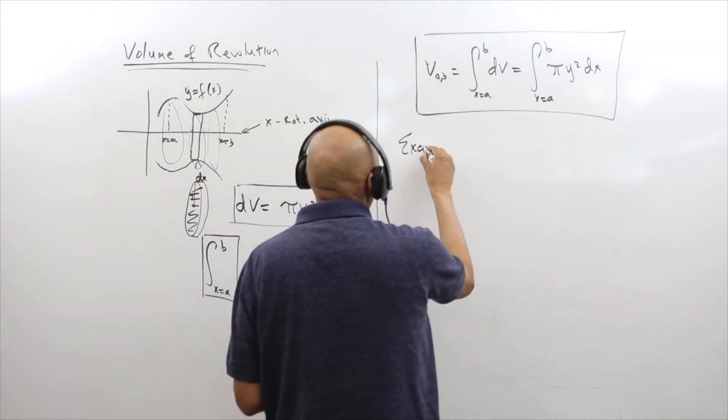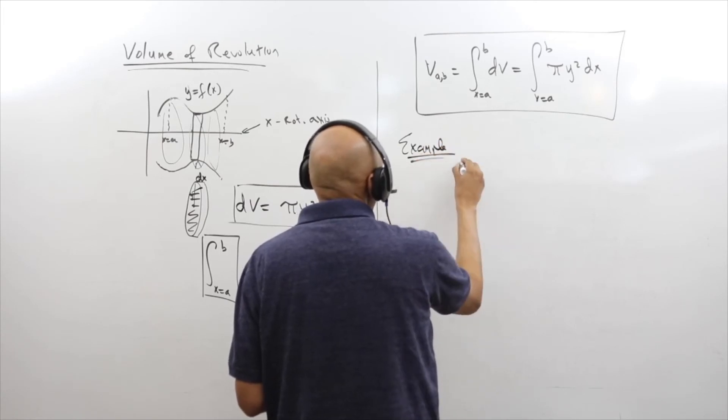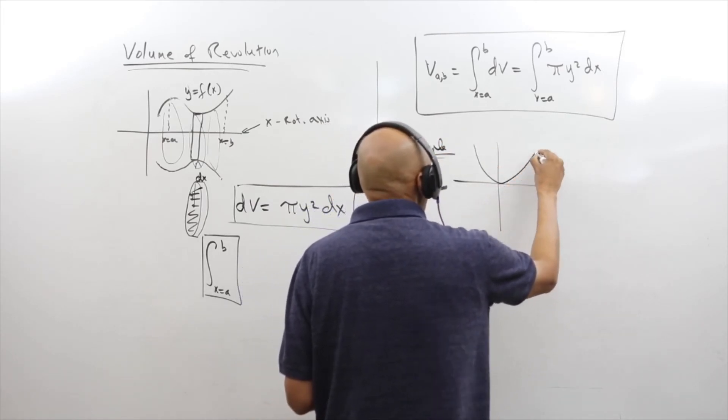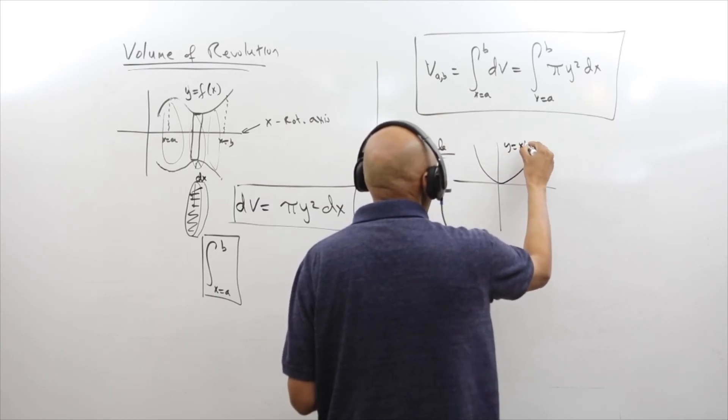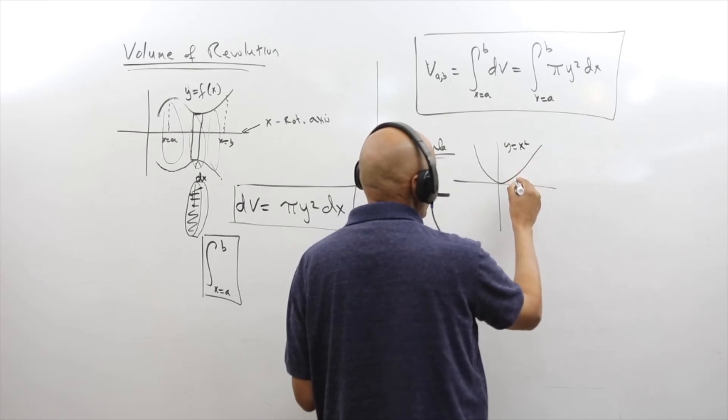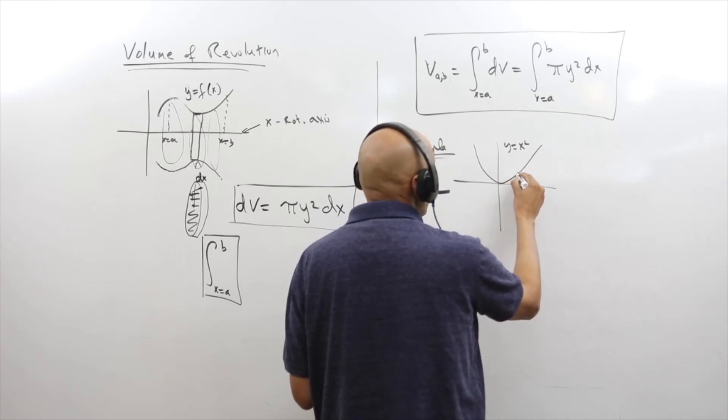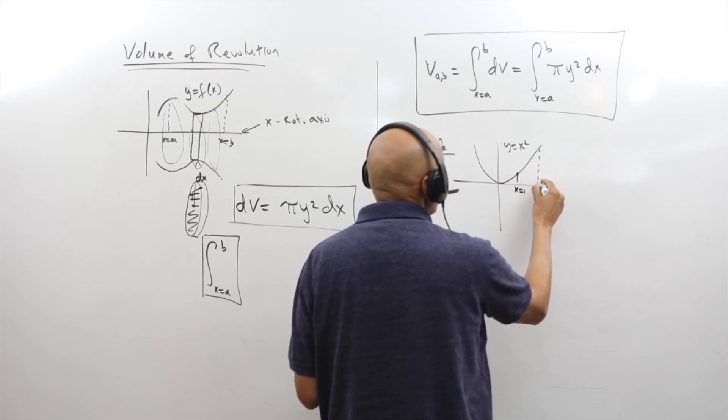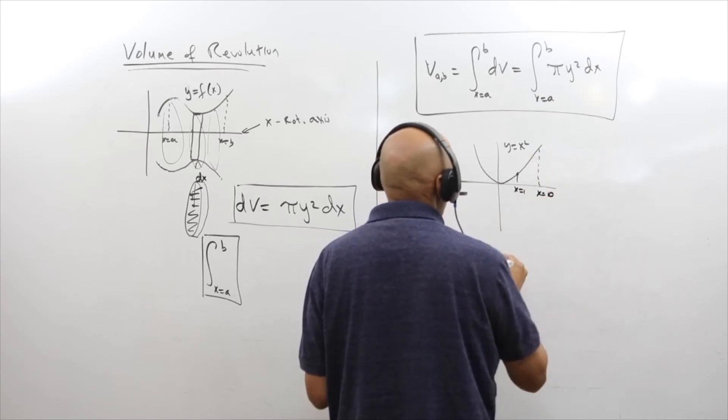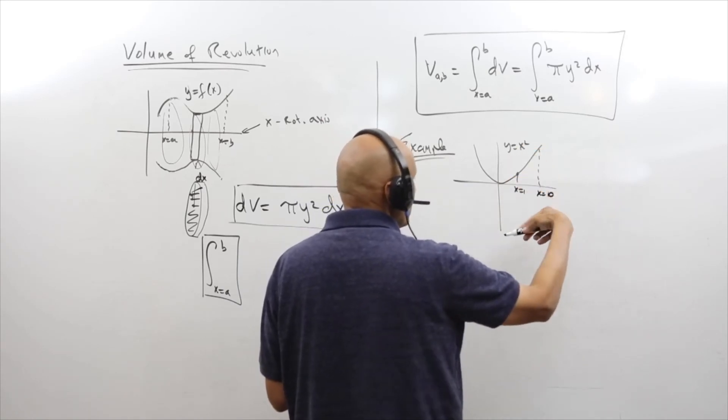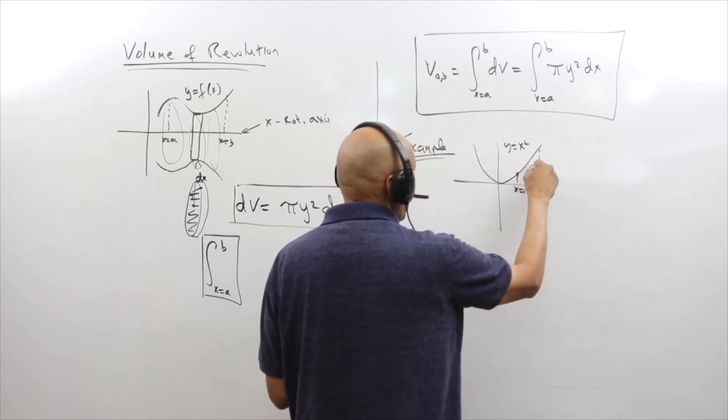So let's do an example. I'll just do the standard function y equals x². It's a simple function, I don't have to think much about it. I'm going to take it from x equals 1 to x equals 10. So I'm taking this and rotating this region from here to here into a volume.